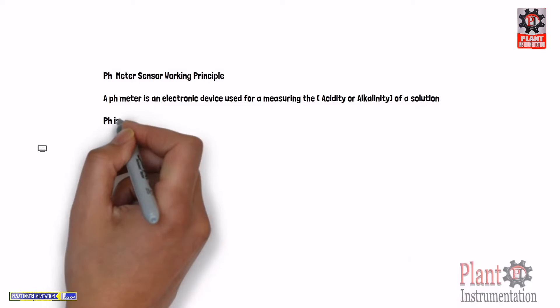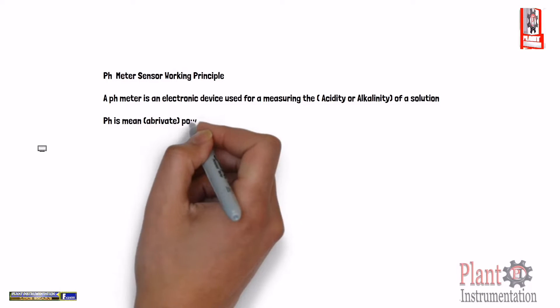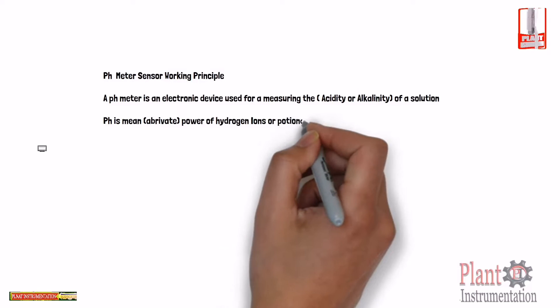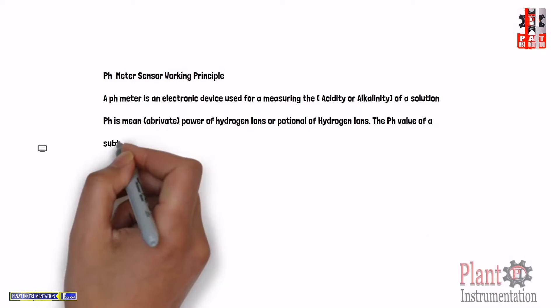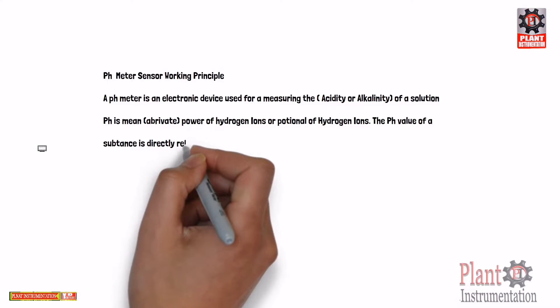The PH value of a substance is directly related to the ratio of the hydrogen ion H+ and the hydroxyl ion OH- concentration.